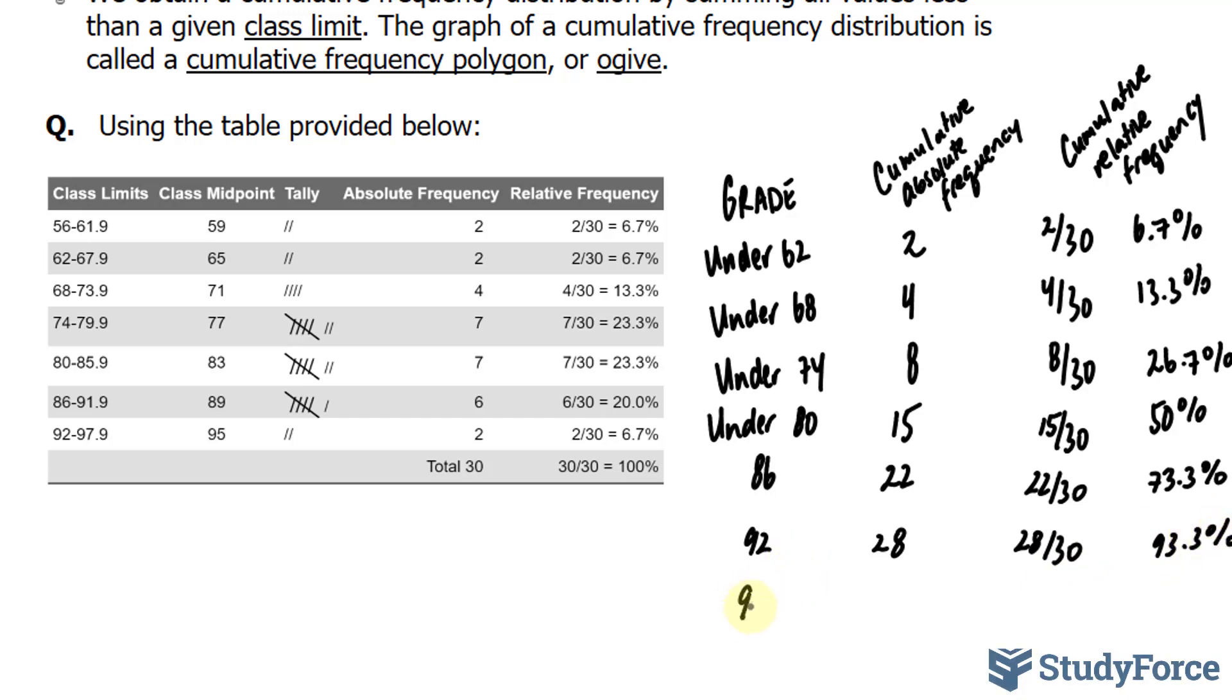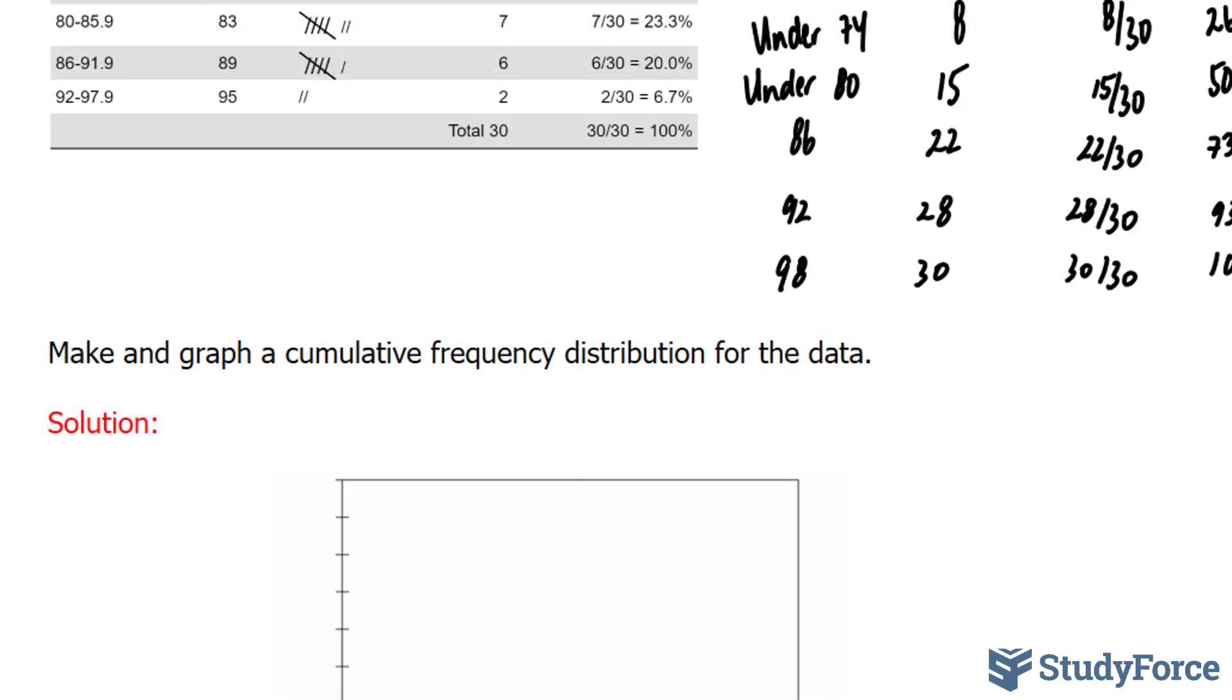Well, that's going to be a perfect 100%. So 30 of the 30 students scored less than 98%. Now that you've created your chart, you can go on to plot this right here.